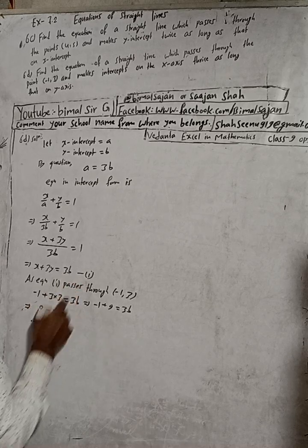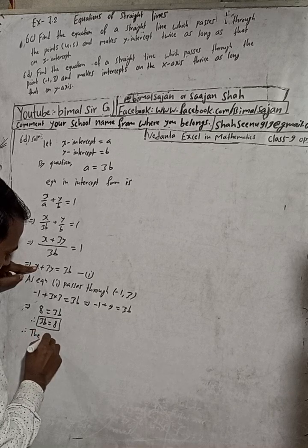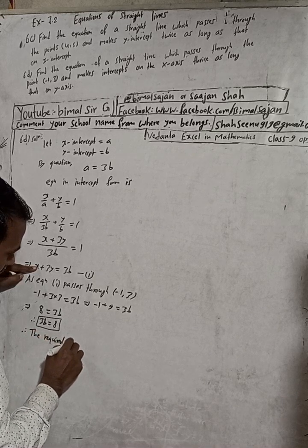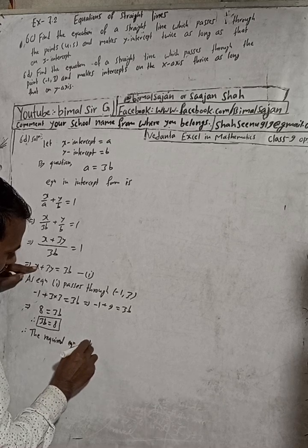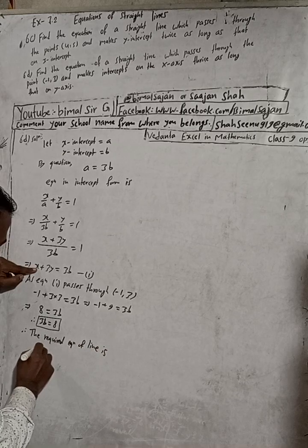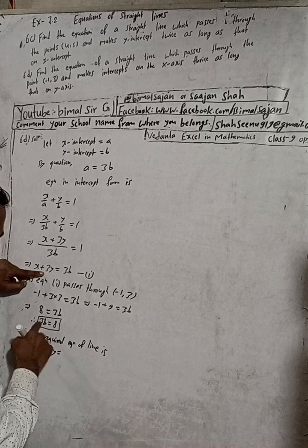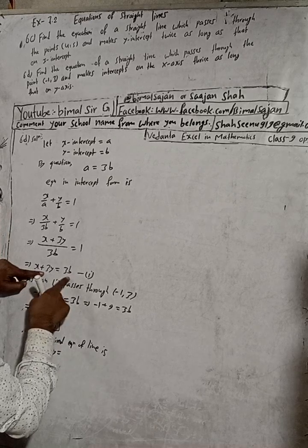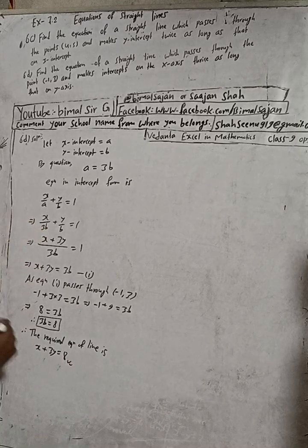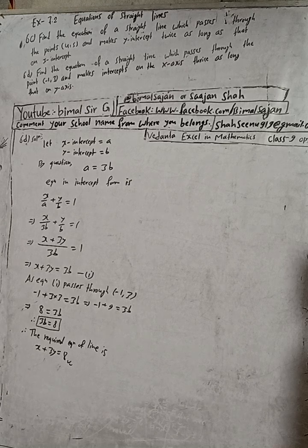Therefore the required equation of line is x plus 3y is equal to, in place of 3b put 8, so x plus 3y is equal to 8. So dear subscribers, viewers, and my students, this is the required solution of this question.